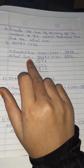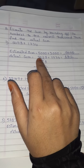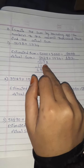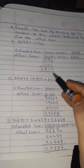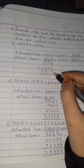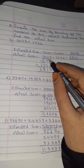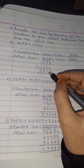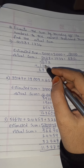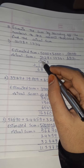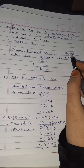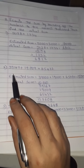Now find the actual sum of 5,078 plus 1,734. Write in columns and add: 8+4=12, write 2 carry 1; 7+1(carry)=8; 8+3=11, write 1 carry 1; carry 1+0=1; 1+7=8; 5+1=6. So the actual sum is 6,812. The estimated sum is 7,000 and the actual sum is 6,812.